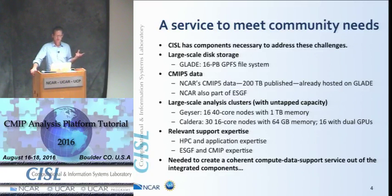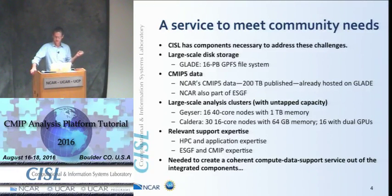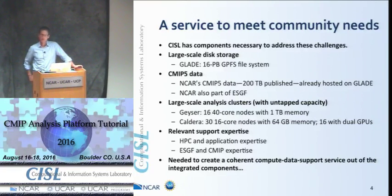Geyser is probably one of the systems you'll use this week. It has 16 nodes, 40 Westmere cores each. Each of those Geyser nodes has a terabyte of memory — a sizable resource that most universities don't have access to. We have 16 of those here. We also have the Caldera cluster, which is 30 nodes with 16 Sandy Bridge cores each — the same as on Yellowstone. Each Caldera node has 64 gigabytes of memory, and 16 of those have dual GPUs, NVIDIA K20s or K20Xs. So two sizable analysis clusters that you might not have access to locally.